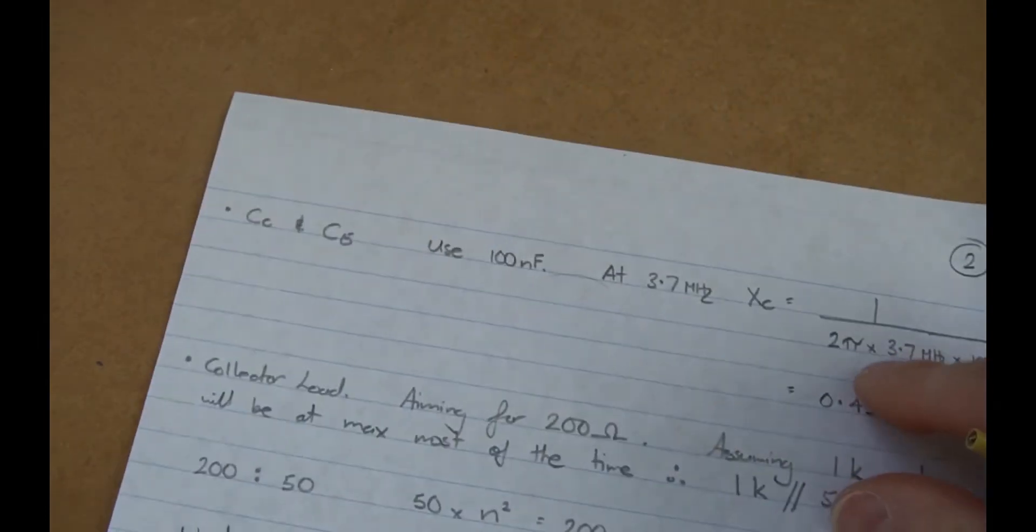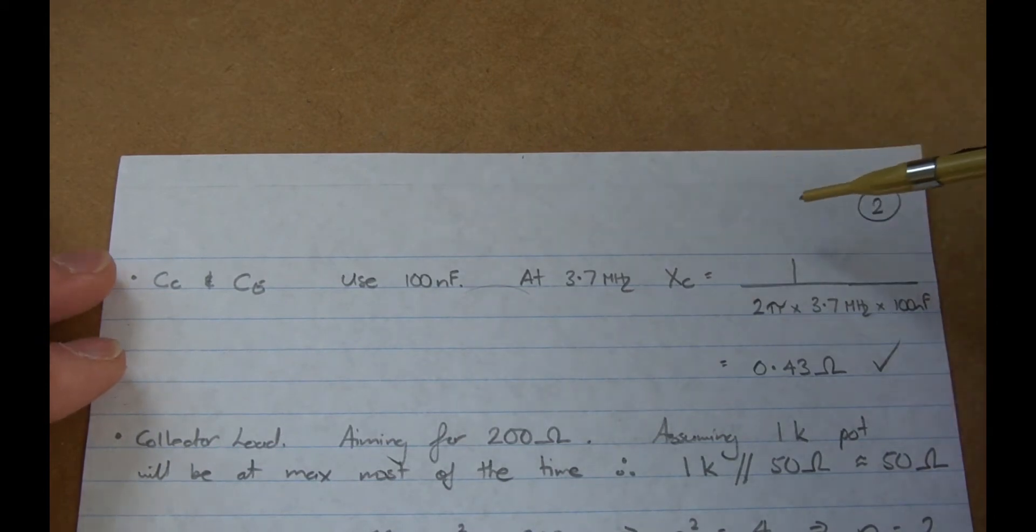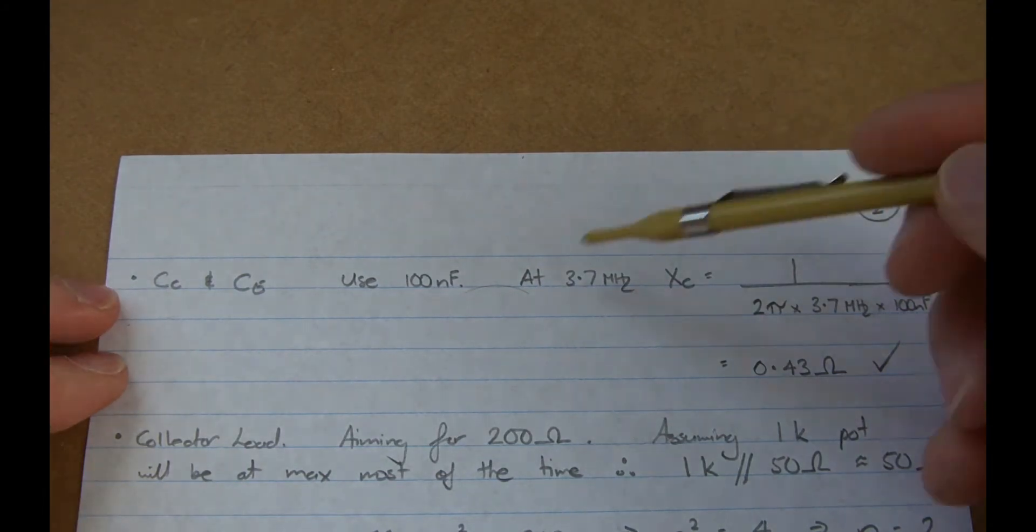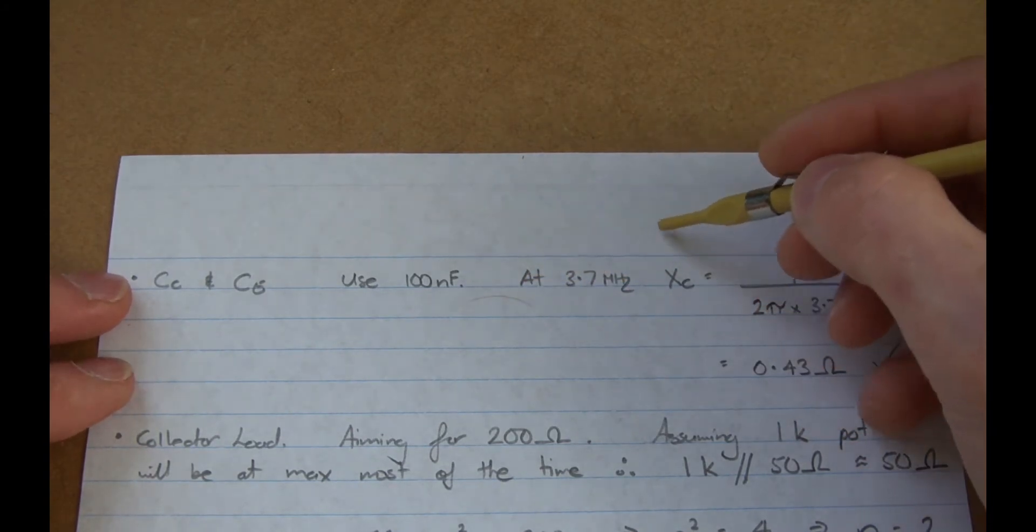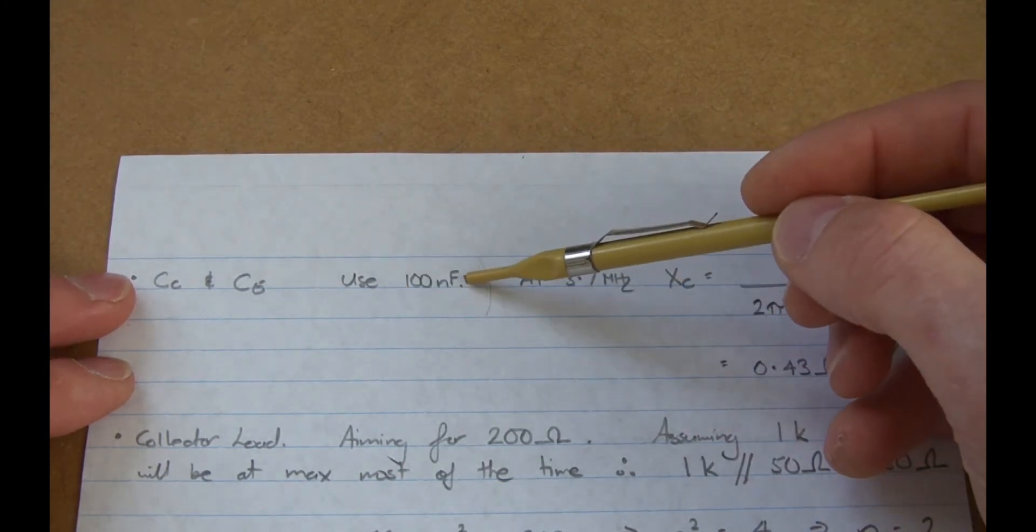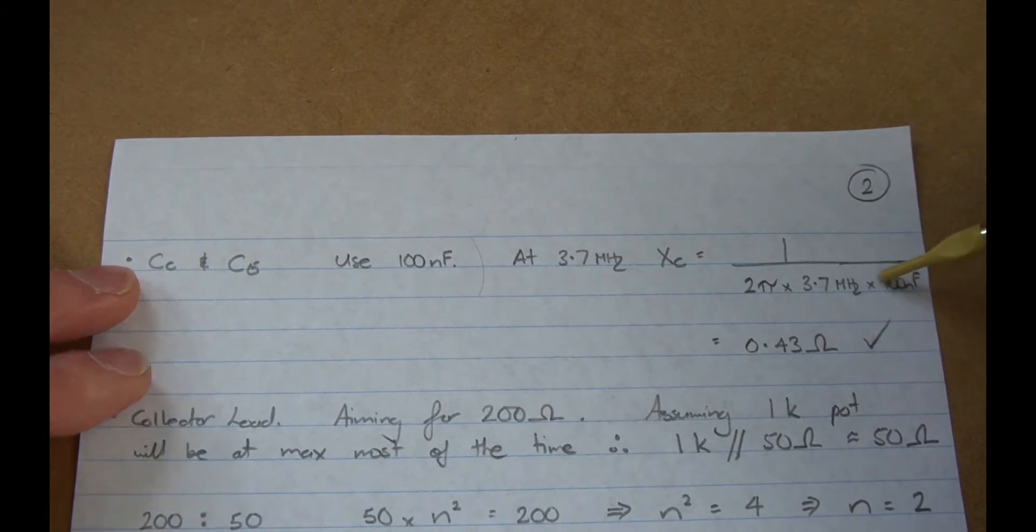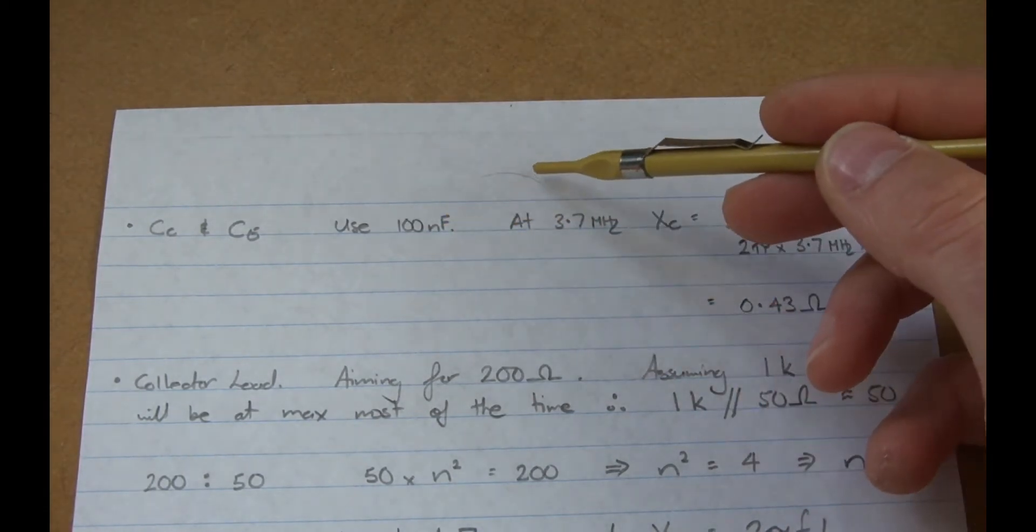So moving on to the coupling capacitors. We said for the last amplifier that we don't want those coupling capacitors to have any more than 100 ohms. 100 ohms at 3.7 megahertz is going to work out to be about 470-odd picofarads. I'm going to use the stock standard 100 nanofarad, so that's, if you look at the size of the capacitor, a 104. It's a very standard sort of value to use, and at 3.7 megahertz, noting that XC equals 1 over 2 pi FC, we come out at 0.43 ohms. So that's a big tick there, as we'd expect, because 100 nanofarads is significantly larger than 470 picofarads.